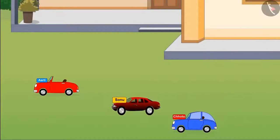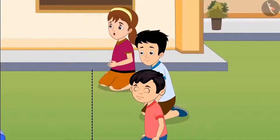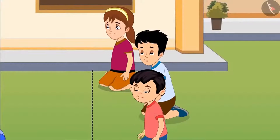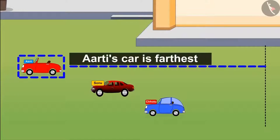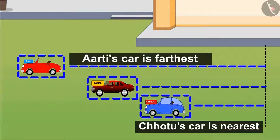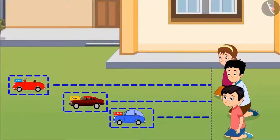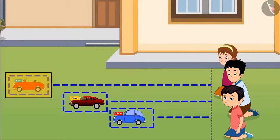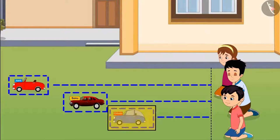Let us see which of the three cars has stopped at the farthest point and which car has stopped at the nearest distance. 'I won! My car is the farthest from here. Sonu's car is behind my car, and Chotu, your car is nearest to us.' So children, did you see? Aarti's car went the farthest and Chotu's car the nearest.